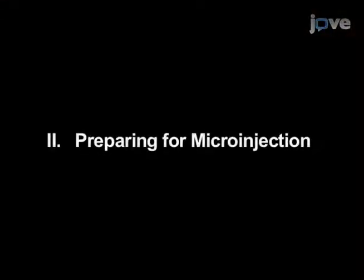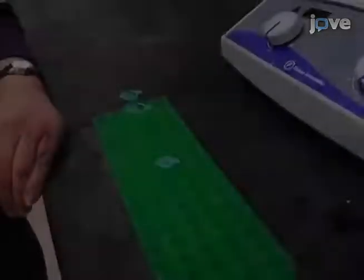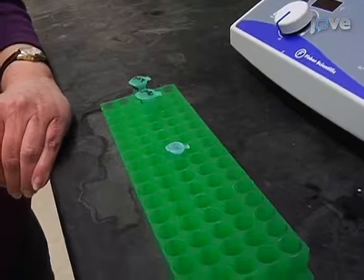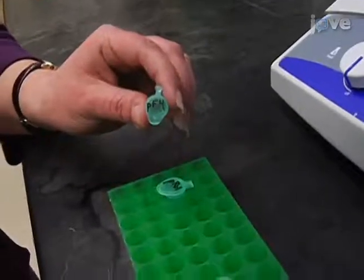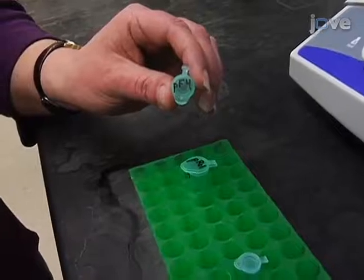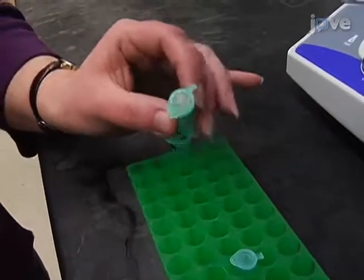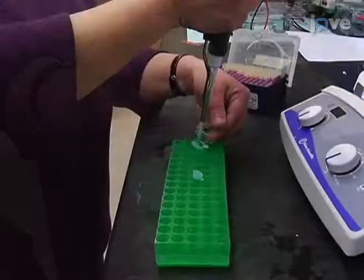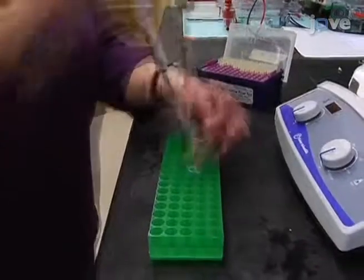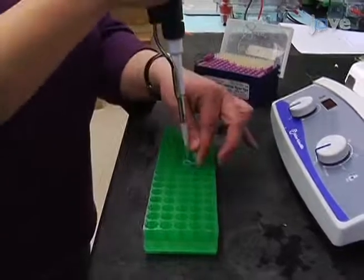So let's get started. Before we begin the microinjection, we have a few preparation steps. First, prepare the plasmid DNA to be injected. Two plasmids are required: one that encodes the tissue-specific expression of our gene of interest, and the second that provides a selectable transformation marker. Mix the plasmids together in a one-to-one ratio of 50 nanograms per microliter each.